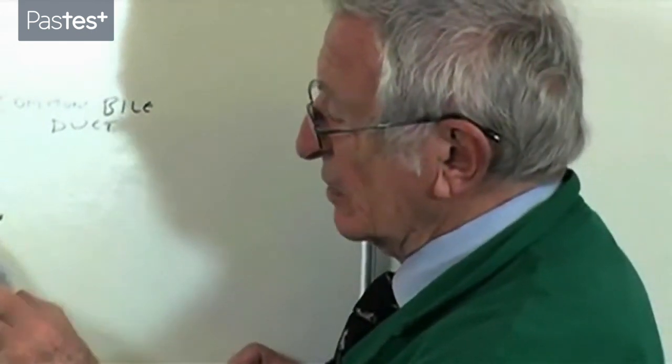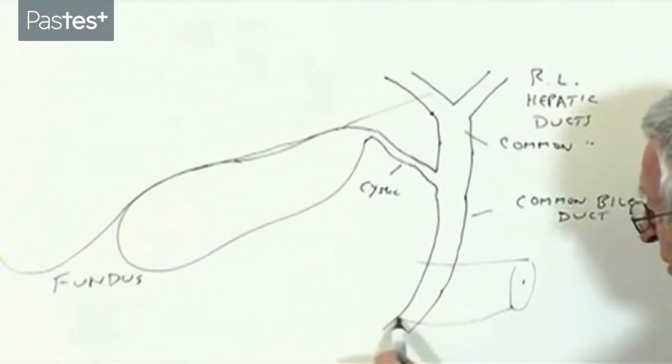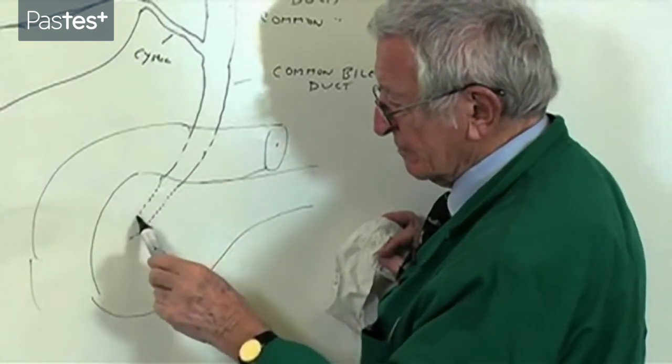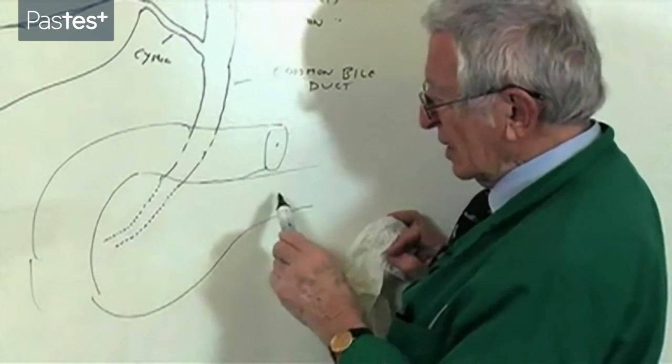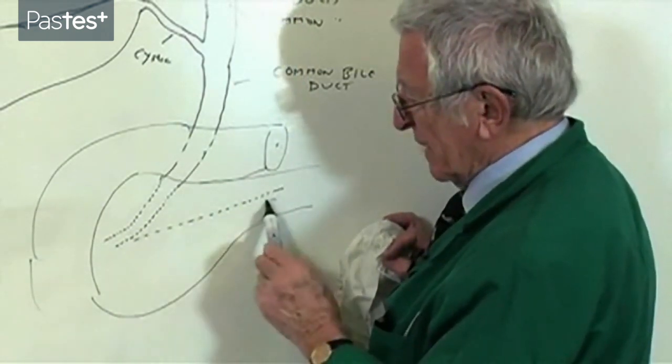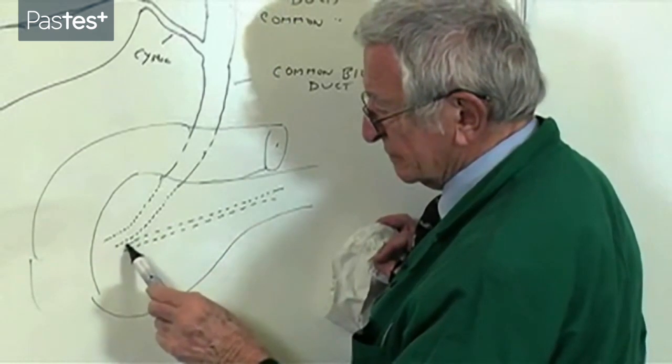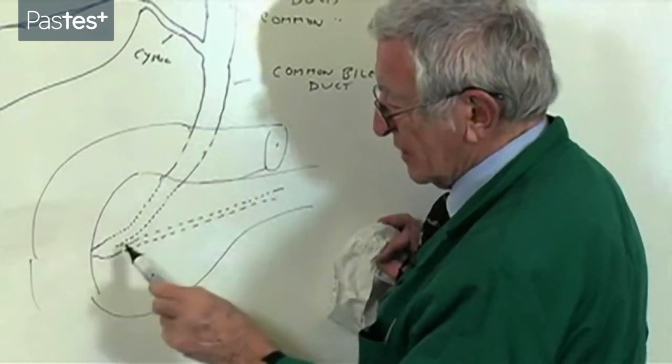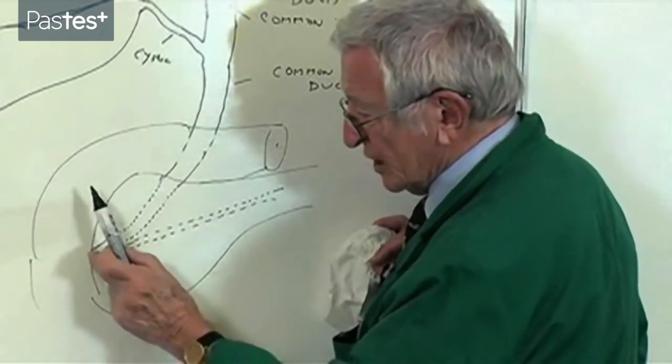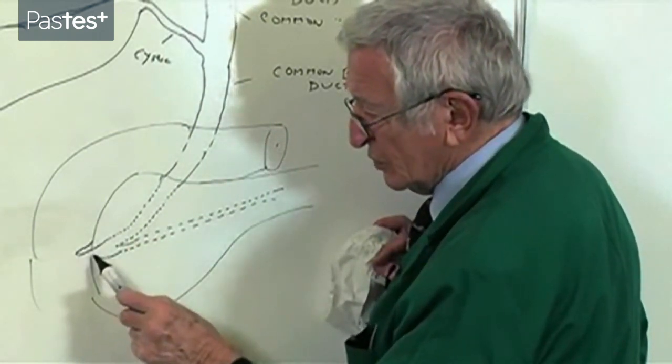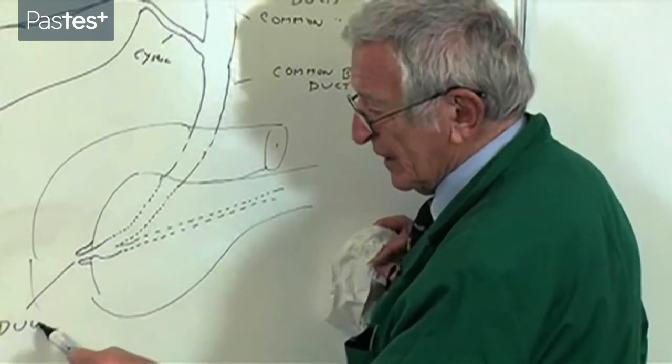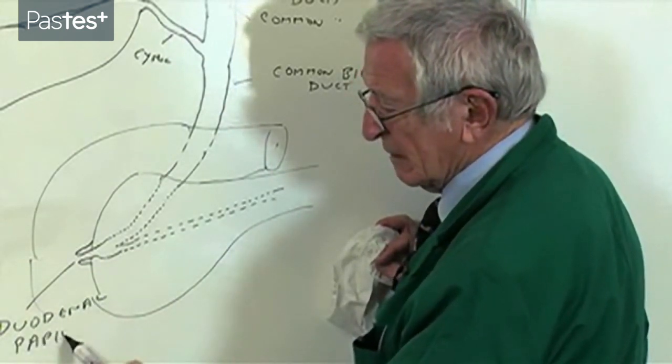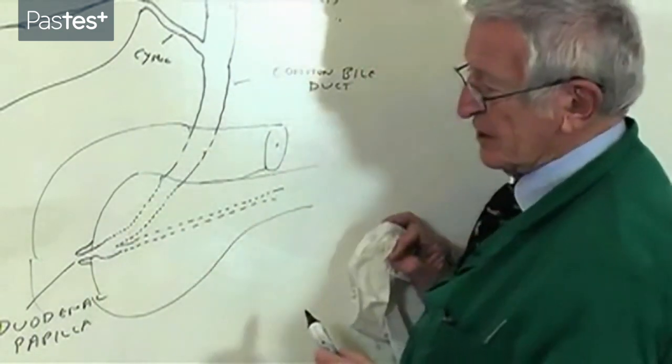Now, the common bile duct runs behind the first part of the duodenum, burrows itself through the head of the pancreas, joins the main pancreatic duct, and there's the common opening of the common bile duct and the pancreatic duct into the duodenum at a little papilla called the duodenal papilla, the common opening of the bile duct and pancreatic duct.